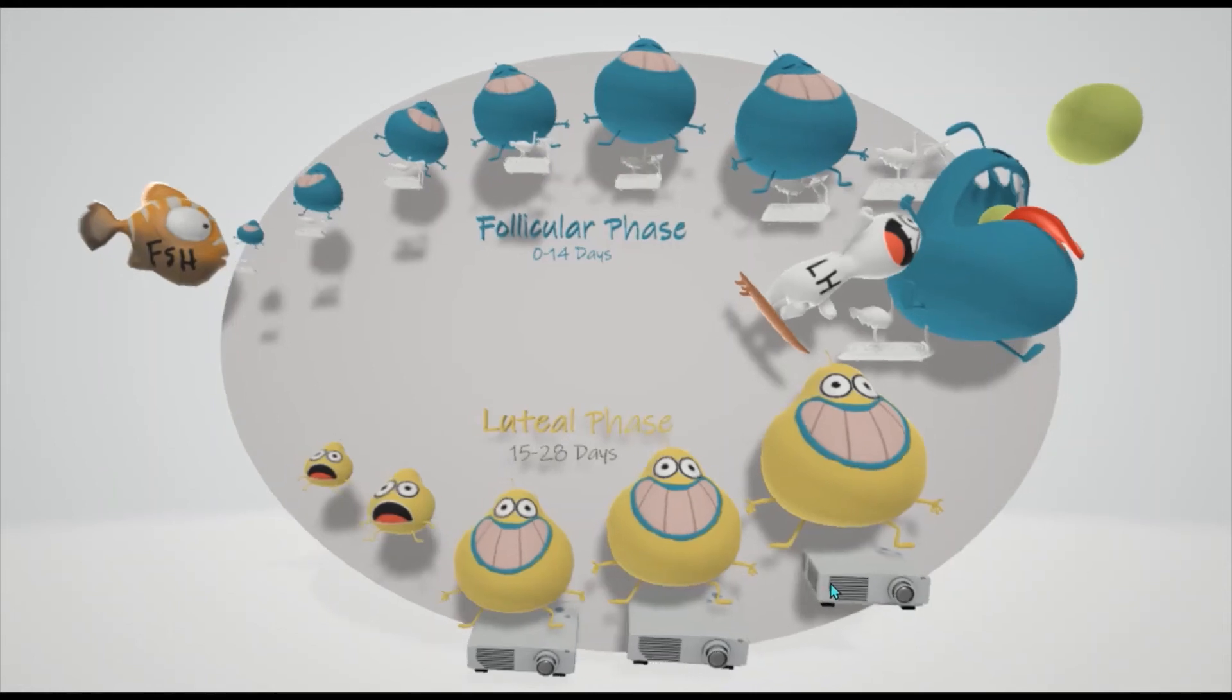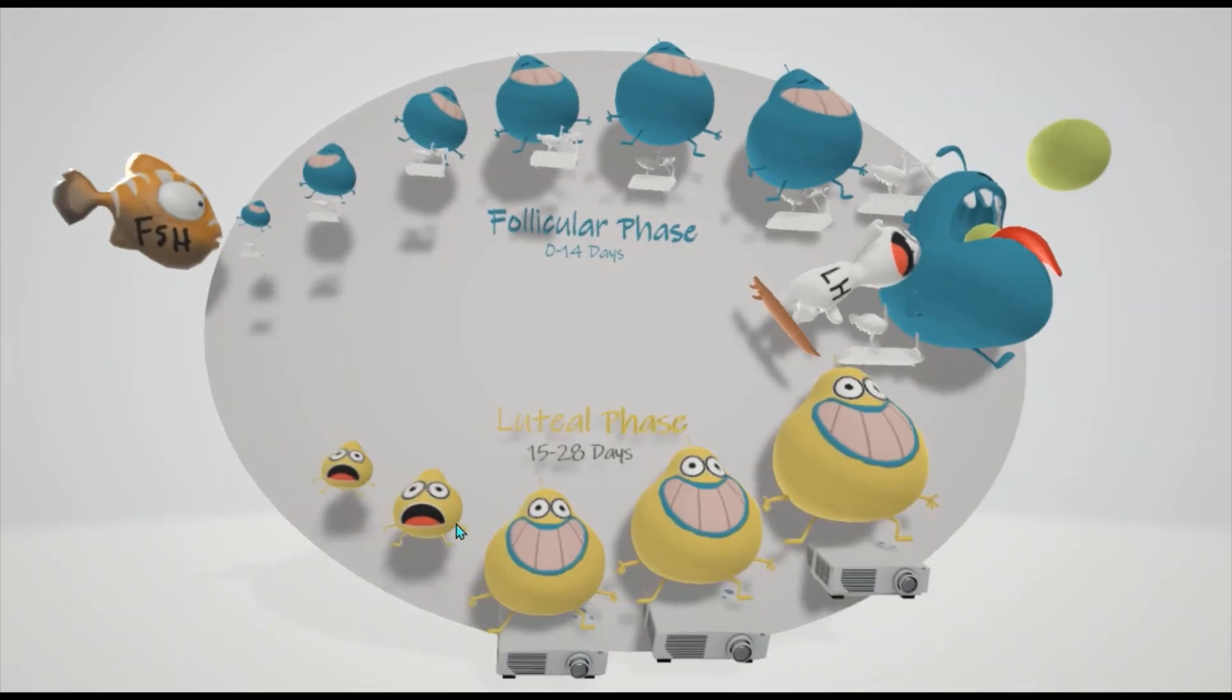Since we don't need the corpus luteum, it disintegrates into the corpus albicans. It's basically due to breakdown by macrophages. The corpus albicans is basically a mass of scar tissue. Since we no longer have the corpus luteum, progesterone goes down and estrogen goes down. Since those things supported the uterus, the uterus is going to break down and slough off. That's what leads to menses, there's bleeding.